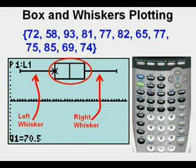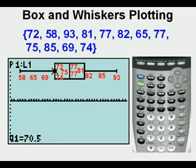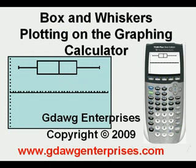Often data look like this, with most of the data packed closer to the center while there are fewer data points at the extremities. Let's look at the 12 values and place them according to their quartile — and here they are. This has been box and whiskers plotting on the graphing calculator. Thanks for viewing.